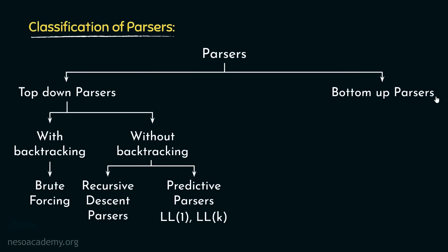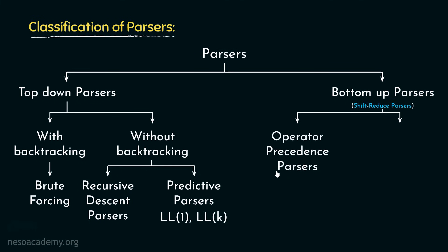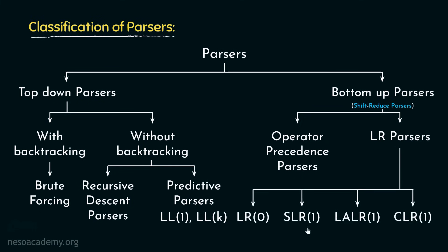Coming to bottom-up parsers, these are also known as shift-reduce parsers. They can be classified into two categories: operator precedence parsers and LR parsers. LR parsers can be classified into four categories: LR0, SLR1, LALR1, and CLR1. We will learn about different parsers in different sessions. In this chapter, we focus on top-down parsers without backtracking, and in the next chapter we will learn about all the bottom-up parsers.